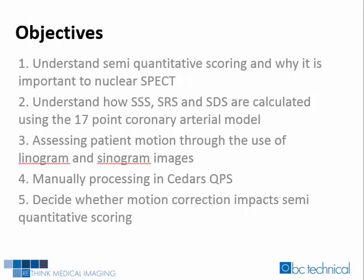The following outlines what will be discussed during this webinar. We will define semi-quantitative scoring and its role in nuclear medicine cardiac SPECT. We will learn how summed stress scoring, summed rest scoring, and summed difference scoring are calculated using a 17-point model. We will learn how to evaluate patient motion using linogram and sinogram images, how to manually process a non-gated study in QPS (quantitative perfusion analysis), and how automatic motion correction affects semi-quantitative scoring.